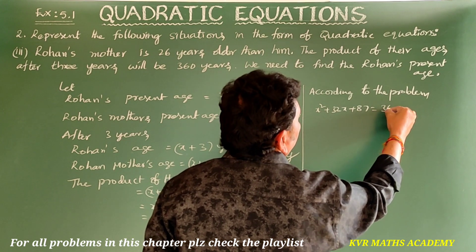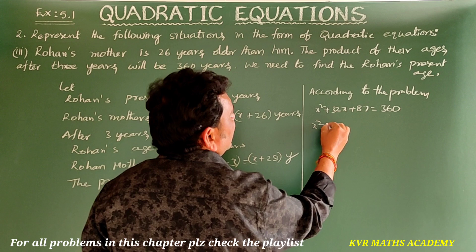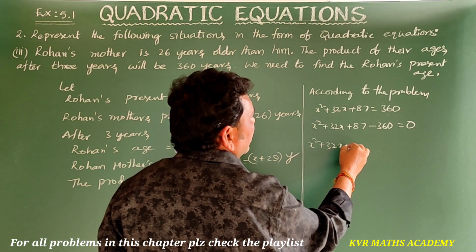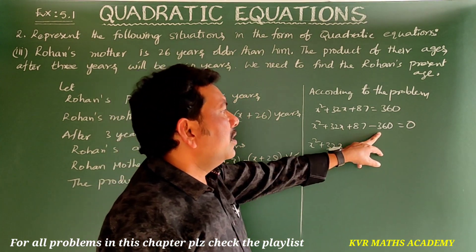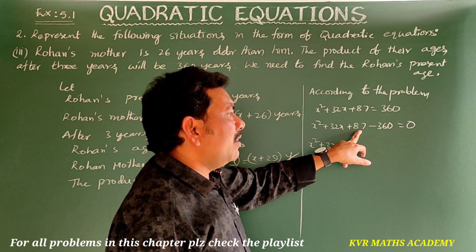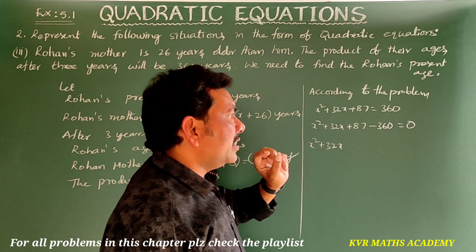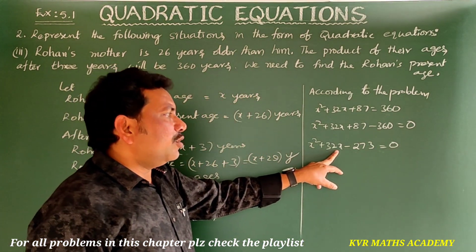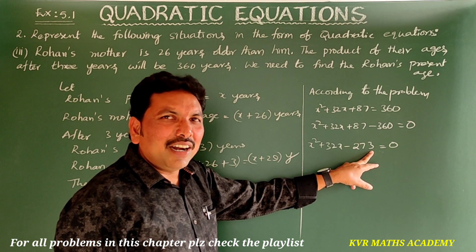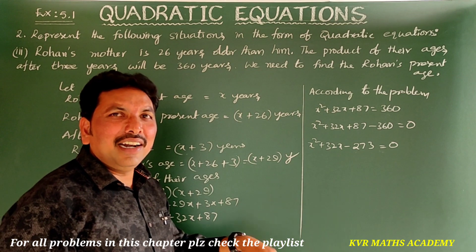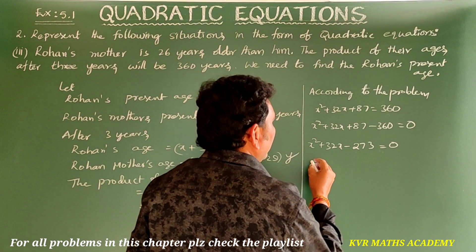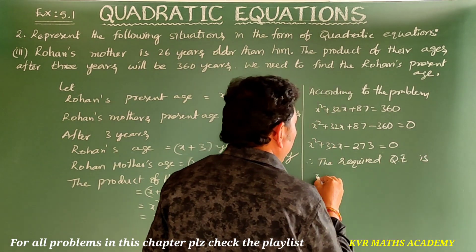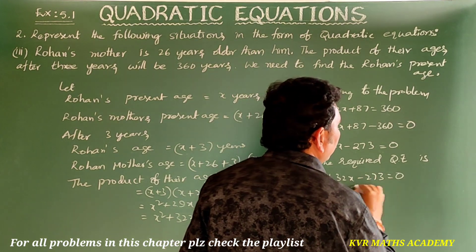According to the problem, this product equals 360. So x² + 32x + 87 = 360. Transferring 360 to the left: x² + 32x + 87 − 360 = 0, which gives x² + 32x − 273 = 0. This is the required quadratic equation to find the ages of Rohan and his mother. Note it down.